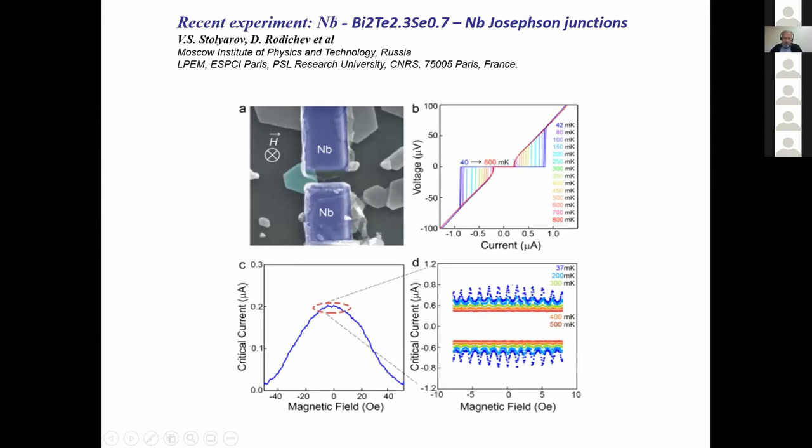Let me go to experiments. Very recently, this type of junctions have been measured both by experimental teams in Moscow and Paris. These are flakes of bismuth tellurium selenide, nanoflakes which have characteristic size of two to three hundred nanometers. Here is one of the possible junctions identified - we have Josephson coupling between these two nearby electrodes. You can see a brief summary of experimental data.